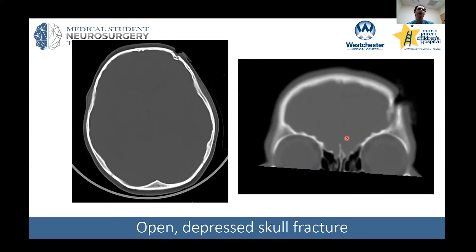Luckily there's no injury below this area. You should always look for any blood products in this area or across the brain — we call this a counter coup injury. The brain basically sits in a sack, the dura, filled with fluid. The brain can shift during trauma and strike the contralateral side. In this child, though, there was no additional injury to the brain.